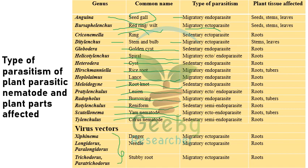Now I'm going to give some genera of nematodes which actually serve as vectors for viral disease transmission. The first important species is Xiphinema — the dagger nematode — which is a migratory ectoparasite. Longidorus, Paralongidorus — needle nematode — is a migratory ectoparasite. Trichodorus and Paratrichodorus — stubby root nematode — is a migratory ectoparasite. Questions like 'which nematode species acts as a vector for transmission of viral diseases' can be expected.